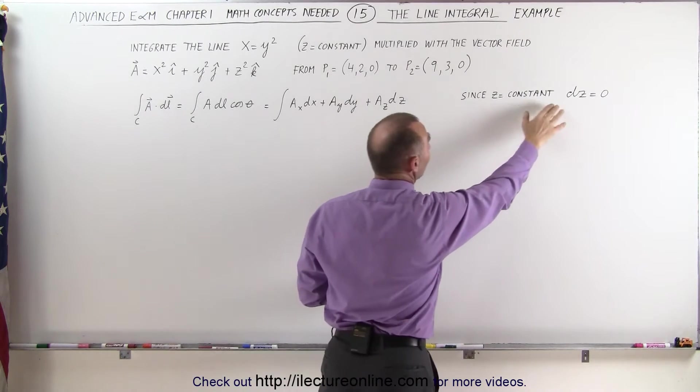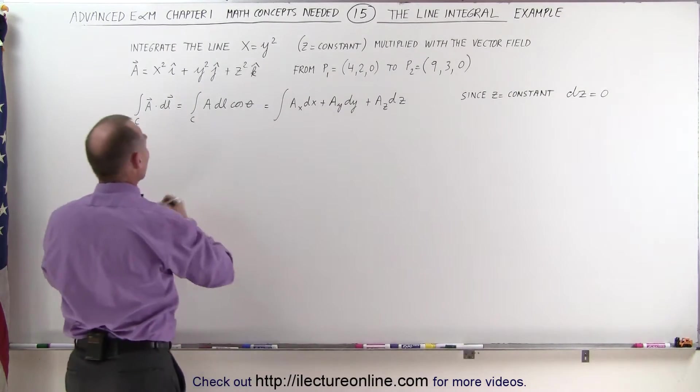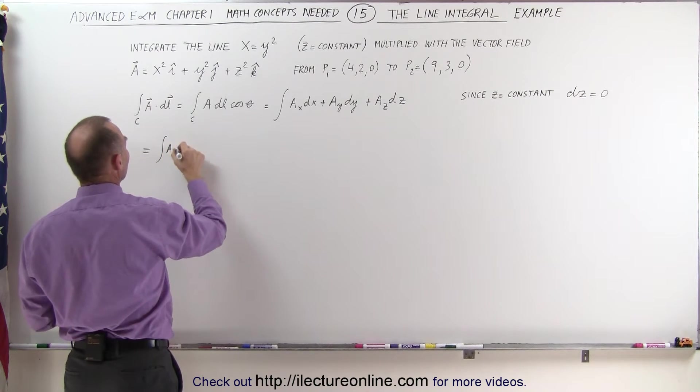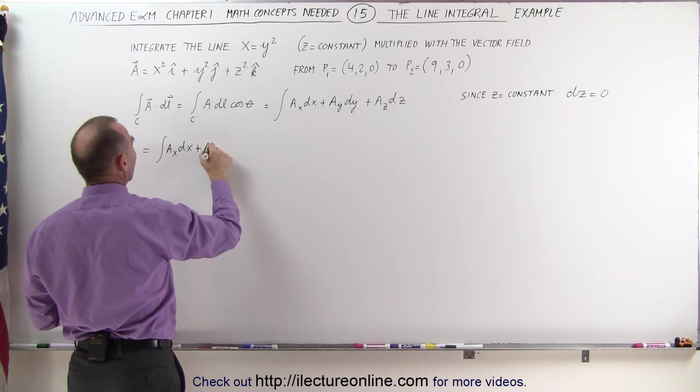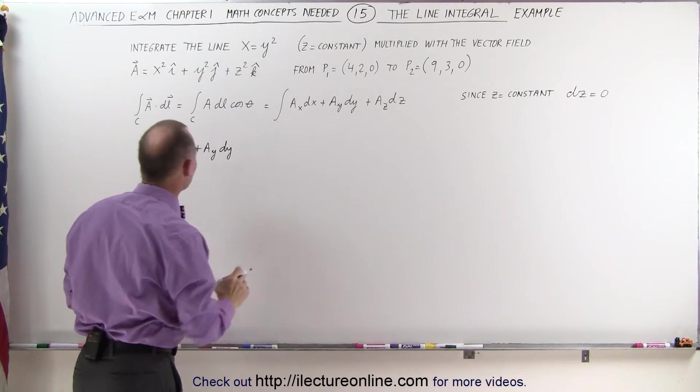plus the z component of the vector field dz. And of course, since z is a constant, dz is 0, so this really then simplifies to the integral of a sub x dx plus a sub y dy.